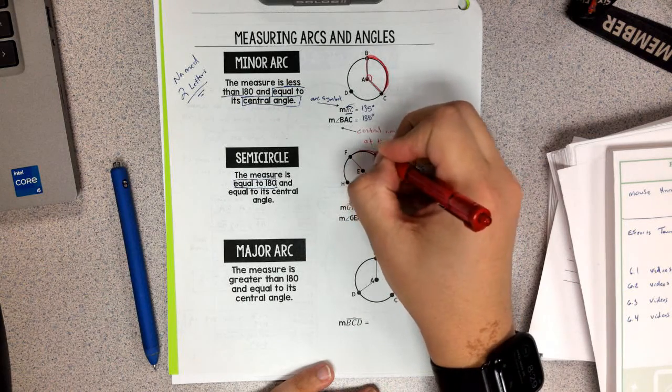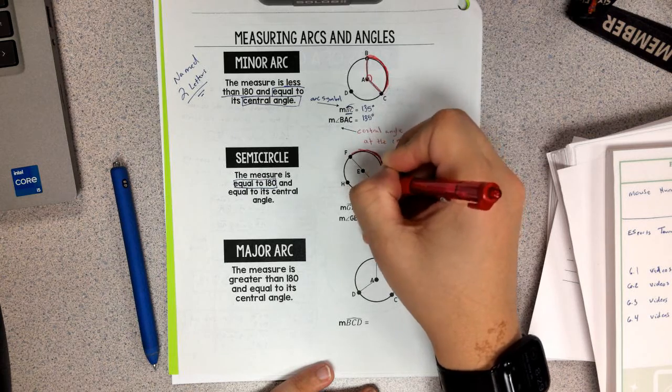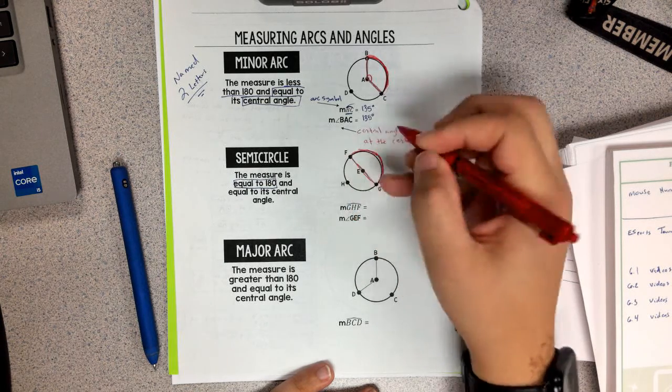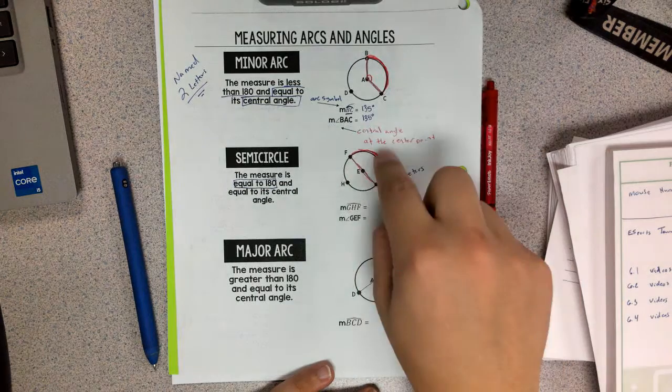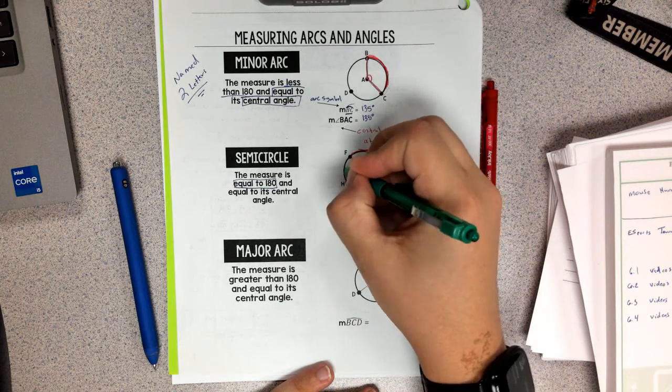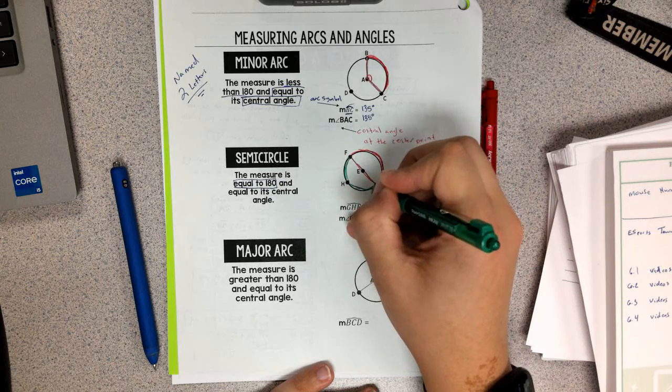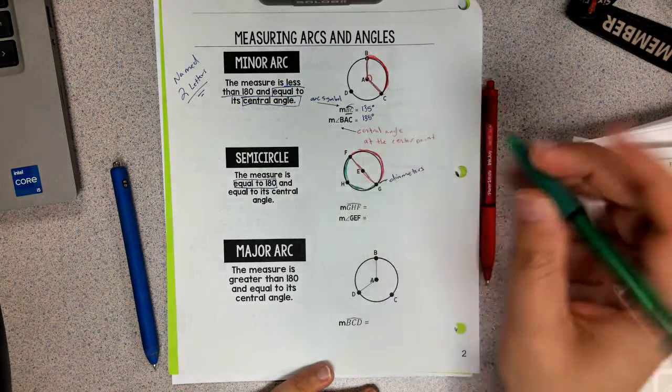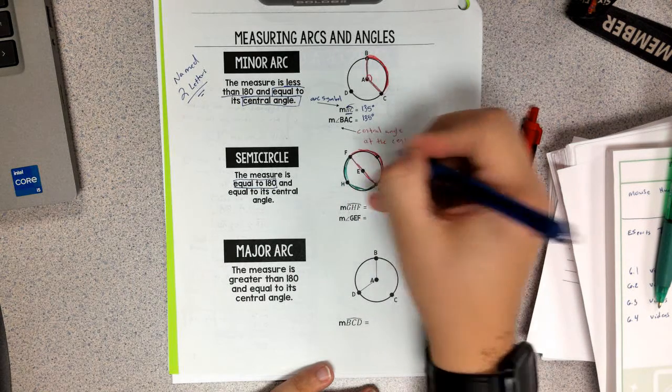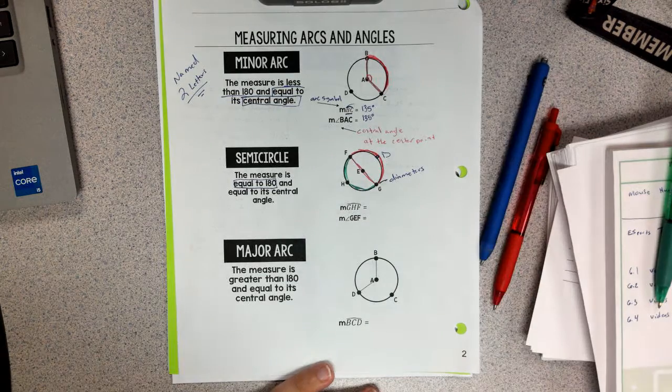So in this picture, I actually have two semicircles. I have semicircle FG. Well, technically there should be another letter there, so that we know which semicircle we're talking about. But then we also have the semicircle over here. So let's add a point here, just for good measure. We'll call it D. So we have two semicircles.